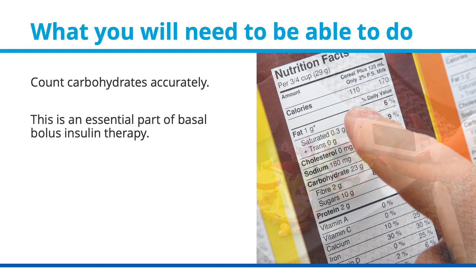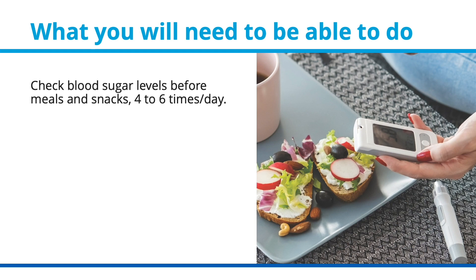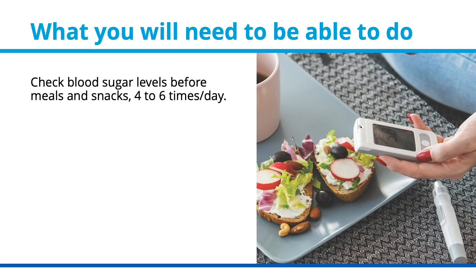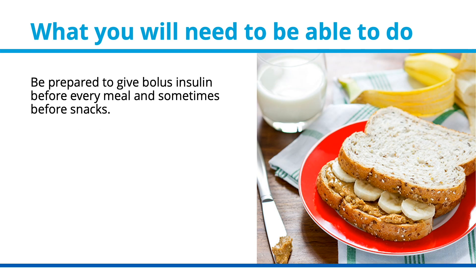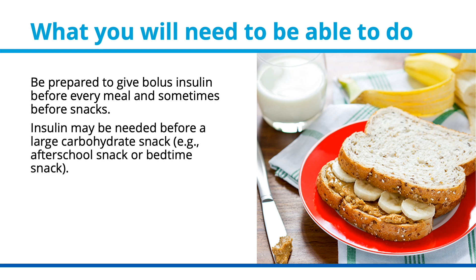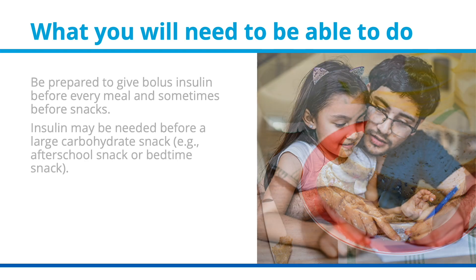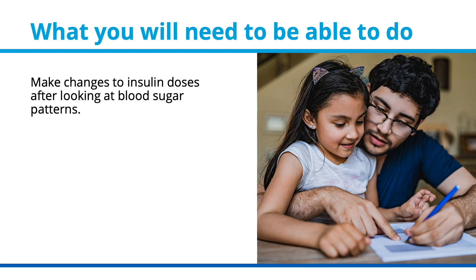You will need to check blood sugar levels before meals and snacks — four to six times per day — and be prepared to give bolus insulin before every meal and sometimes before snacks. Insulin may be needed before a large carbohydrate snack, such as an after-school snack or bedtime snack. You will also need to make changes to insulin doses after looking at blood sugar patterns.